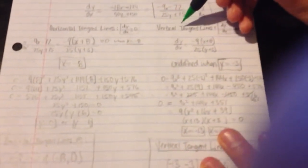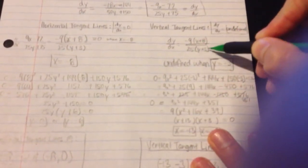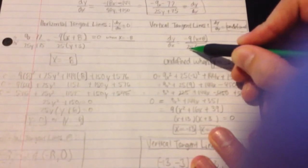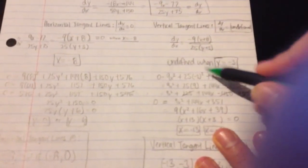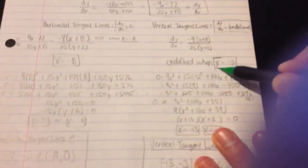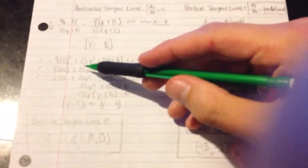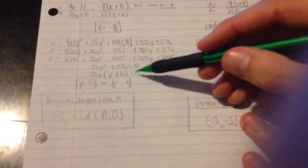Same thing with the vertical tangent lines, except to make this undefined, you would need this y value, after I factored out the 25, to be negative 3. This whole equation will be undefined when y is equal to negative 3. From this point on, I'm just algebraically solving for y here and solving for x on the other side.